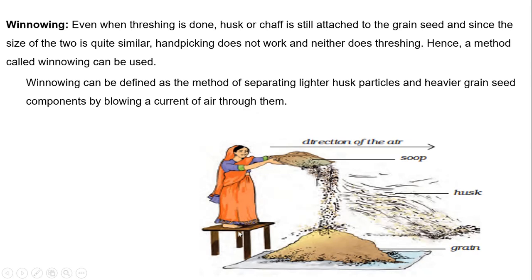So here what happens: the person stands on a wooden stool and takes the grains along with the impurities. When the air blows, as the husks are light, the air will carry the husk and it will settle down in one position. And as the grain is heavy, all the grain will fall in another position. This is how they generally separate the grain and the husk with the help of wind — that is why the method is called winnowing.